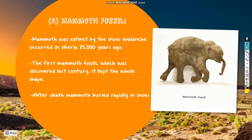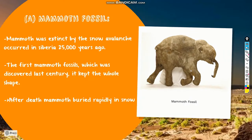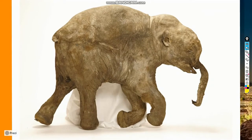The mammoth was extinct — it was made extinct by a snow avalanche that occurred in Siberia around twenty-five thousand years ago. After the mammoth's death, it was buried rapidly in the snow, and that is the mammoth fossil they found.